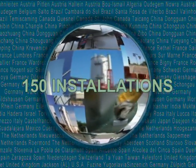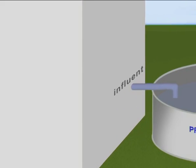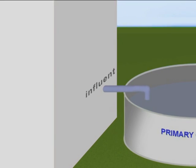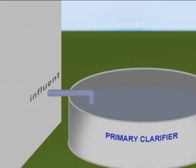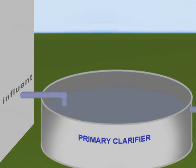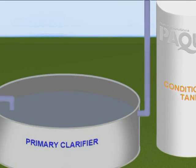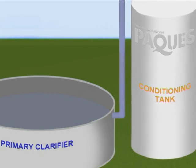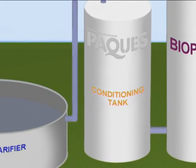A typical PAC purification process for the paper industry consists of the following stages. Suspended solids are removed during pre-treatment. The influent is then conditioned and subsequently pumped into the Biopac reactor.